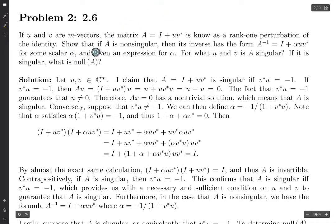Why is it useful? I'm not quite sure, but I know that we can say some things about it. For example, if A is non-singular, then its inverse has the form A inverse equals I plus alpha times U times V star, where alpha is some scalar and we'll figure out what it is.